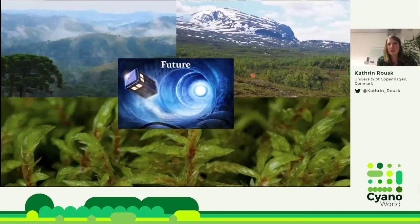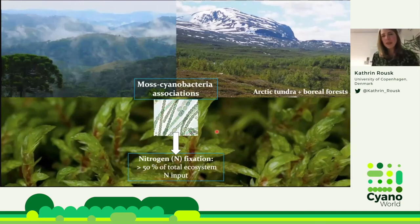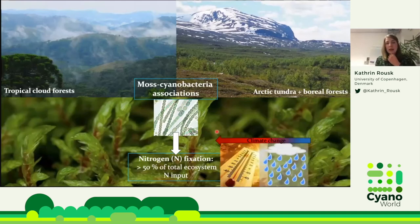Now I'd like to talk about the future. For Arctic tundra and boreal forest systems, we know these moss-bacteria associations are really important, contributing more than half of total ecosystem nitrogen input. We want to move to another ecosystem type — tropical cloud forests — where there are so many mosses. But to the best of my knowledge, hardly anyone has looked at whether these mosses are colonized by cyanobacteria, who is there, how much they fix, or whether they're important for the ecosystem. We also want to look at how climate change will impact this process, since these forests will become much drier in the future — which is probably bad for nitrogen fixation.